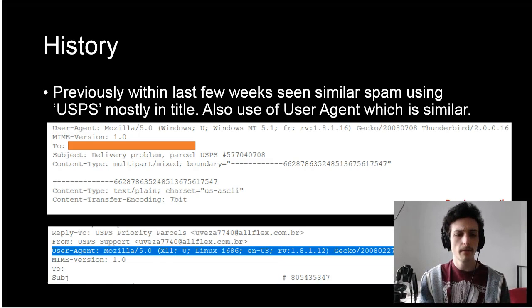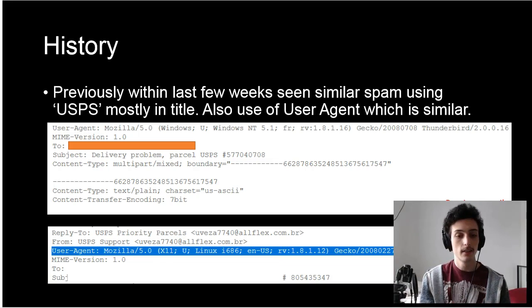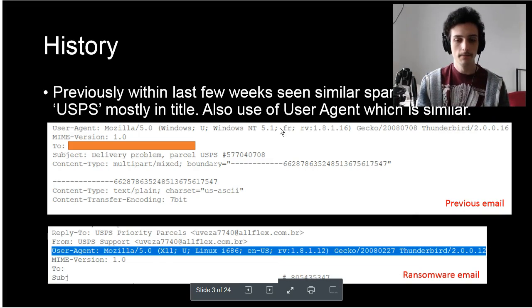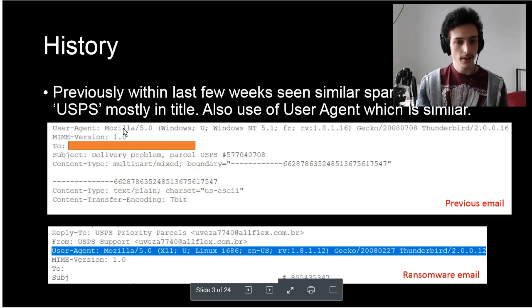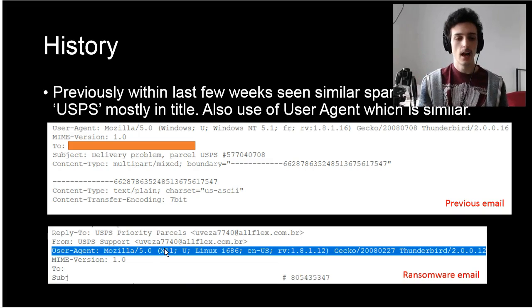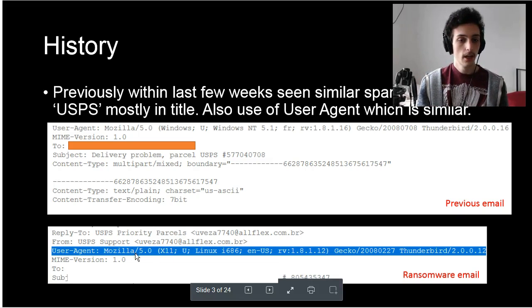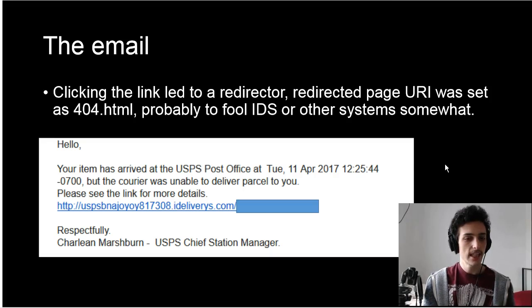A little bit of history: I've been sent spam from these guys before, as I recognized the similarity a couple of weeks ago. In the previous email we can see USPS as the lure, and the user agent is basically the same. You can see Mozilla 5.0 but then there's X11 here - this is using Linux. We're both using Thunderbird but different versions. This is the ransomware email - fairly simple, quite identifiable.